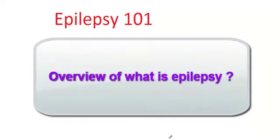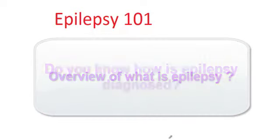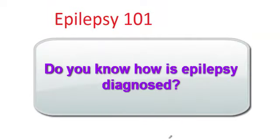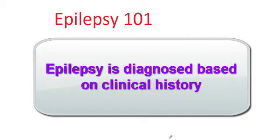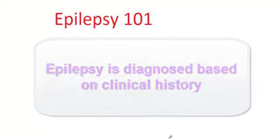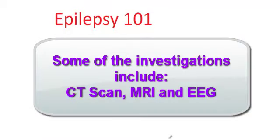Hello. Over the next 15 minutes, I will try to give you a very brief overview of what is epilepsy — let's call it Epilepsy 101. The way a neurologist diagnoses epilepsy is by clinical history, and obviously CT scans, MRIs, and EEGs are all very useful in helping with the diagnosis.